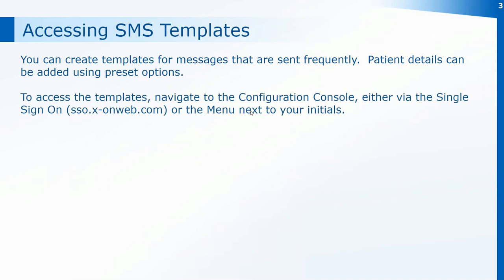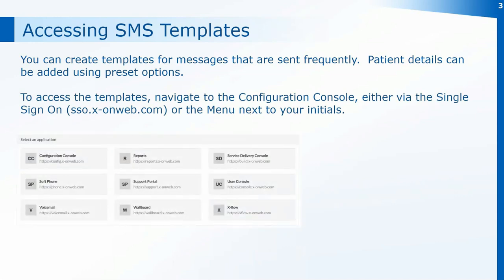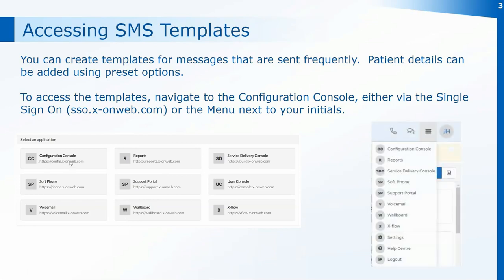To navigate to the configuration console you can either go through the single sign-on window when you first log in and use the configuration console application from there, or if you're already logged into a console click on the menu — the three lines next to your initials at the top — and then navigate to the configuration console from whichever console you're already in.